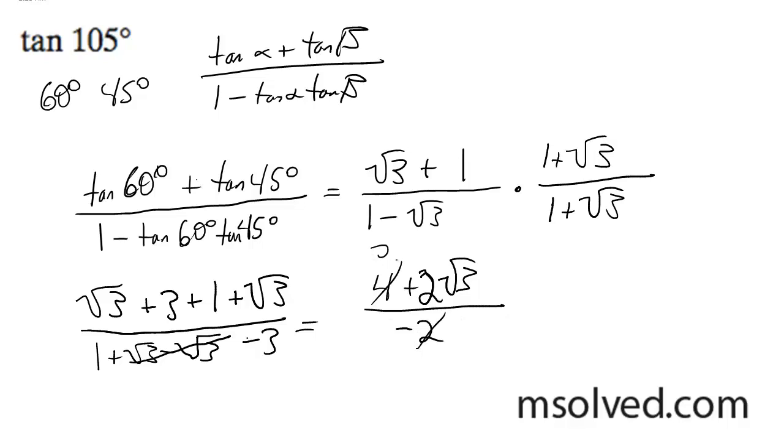So 2 goes away. This becomes 2. This becomes 1. And the minus sign distributed, we get negative 2 minus root 3. And this is our exact value. That's it.